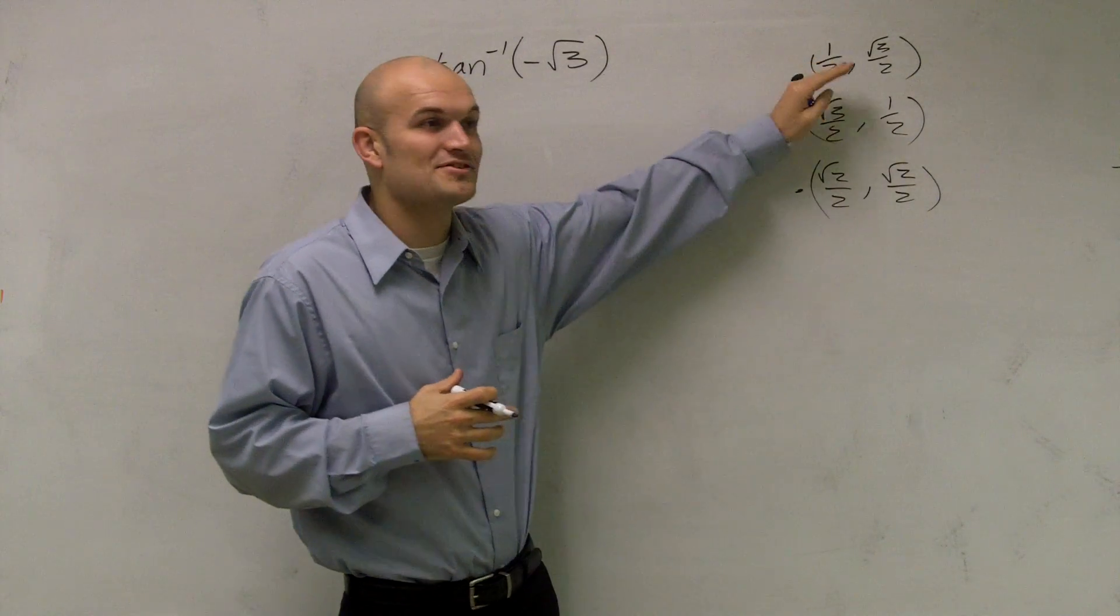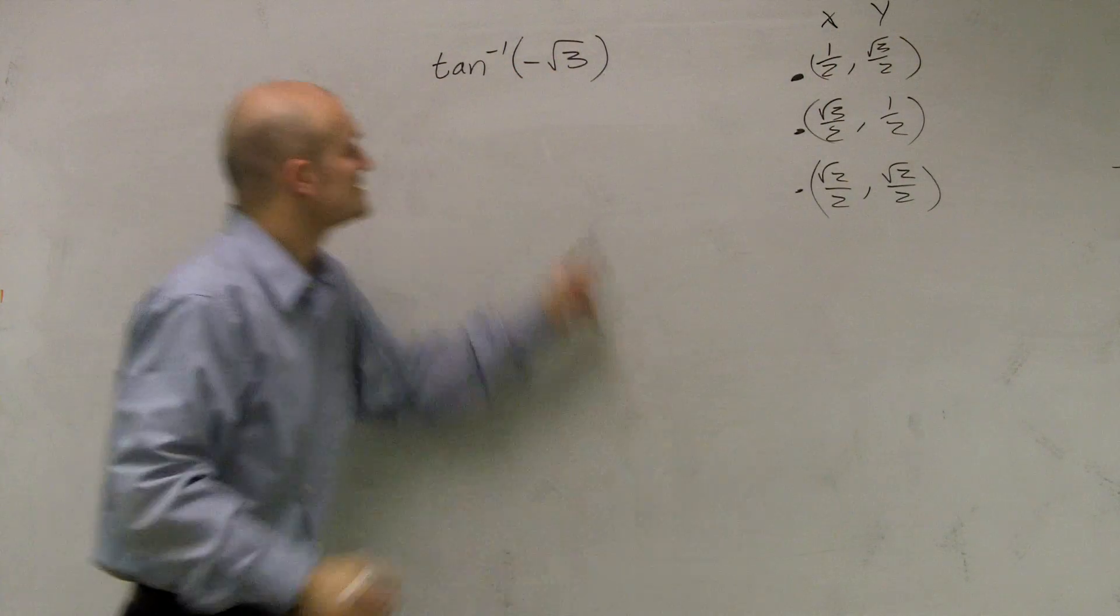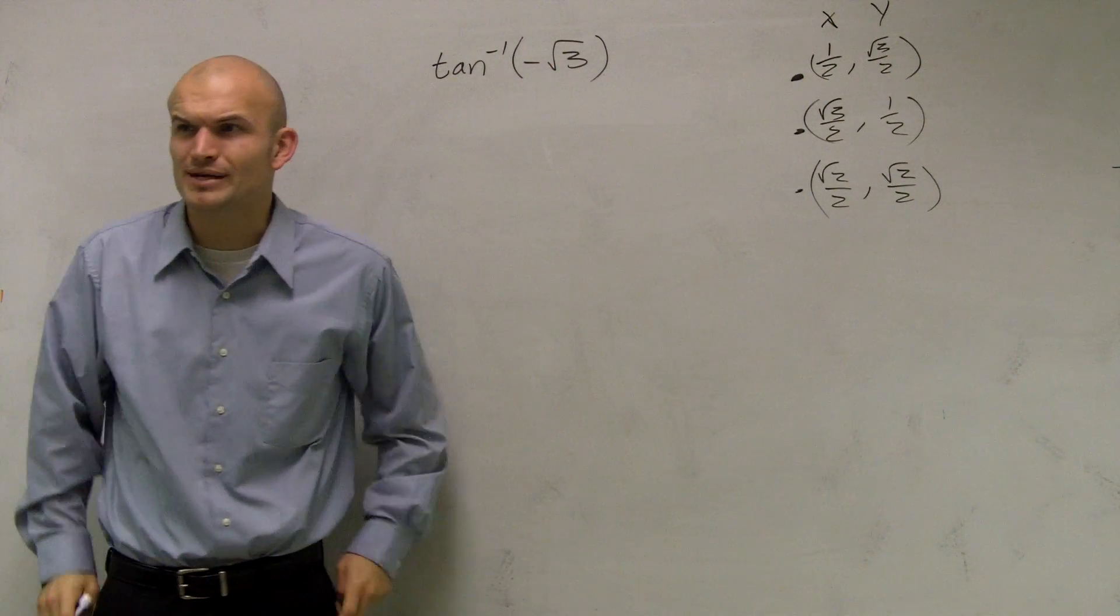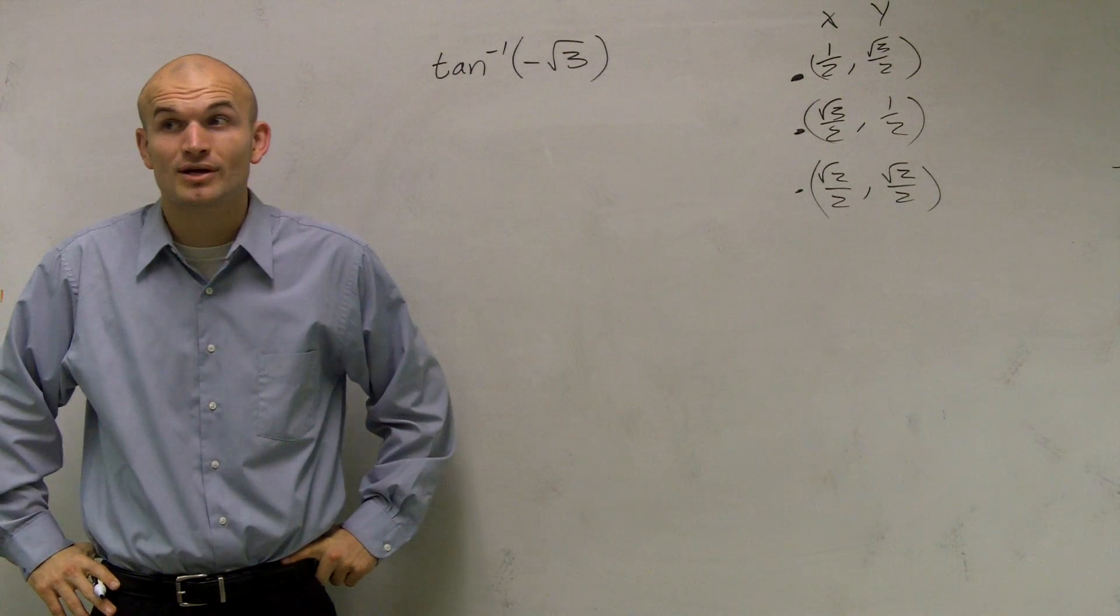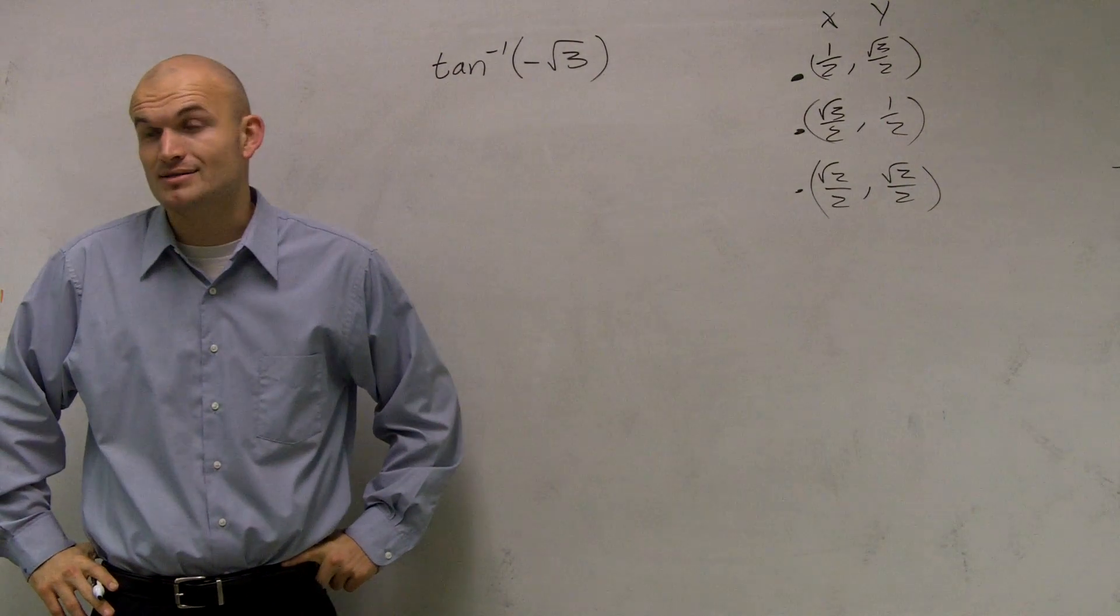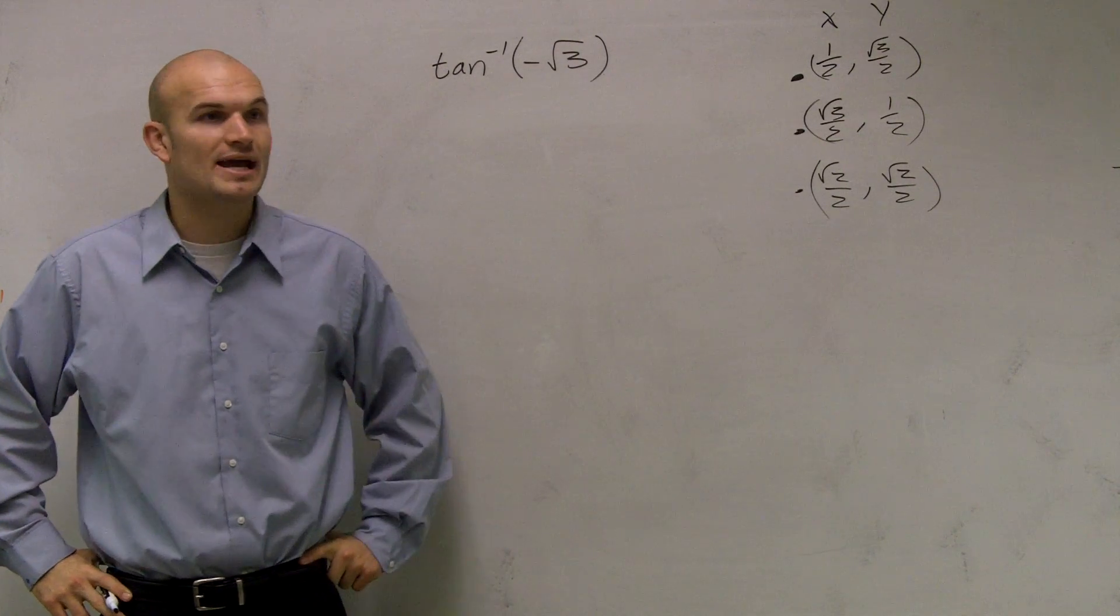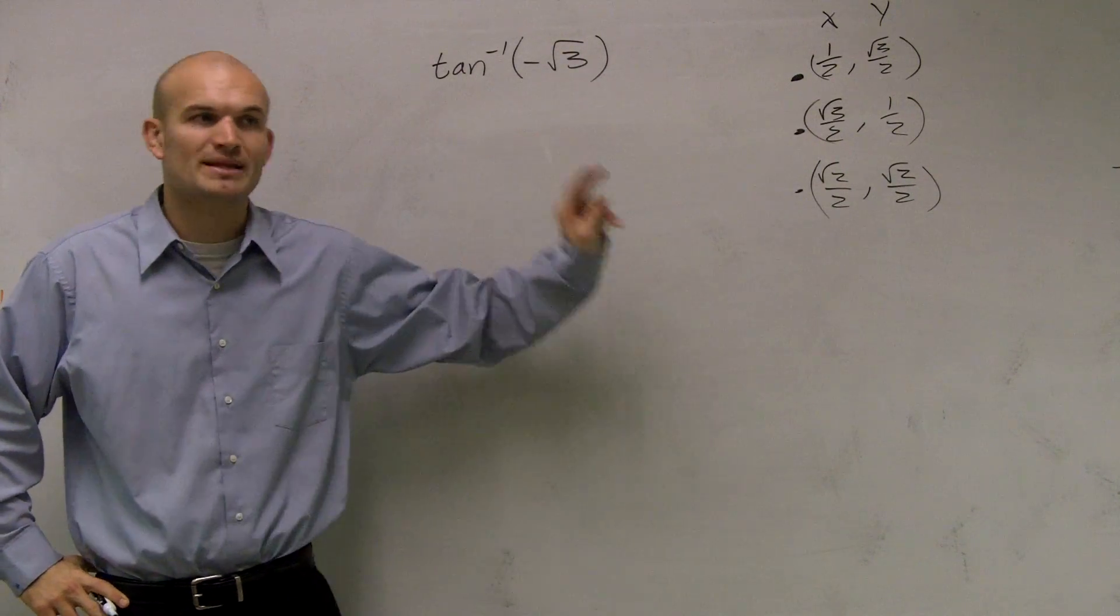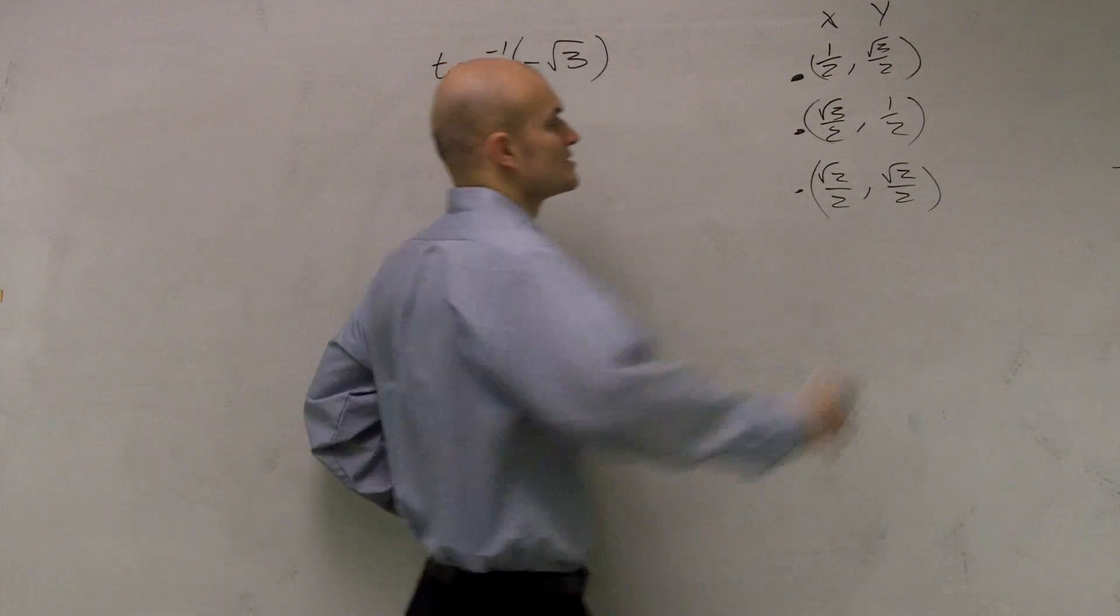So if you guys remember, here's your x, and here's your y. Well, they're saying tangent is radical negative 3. So how did they get to that point? Well, remember, all they really did was put your y over your x. So what we need to do is determine which y over x is going to yield us a radical 3. And I'm not going to worry about the negative, because that's just going to deal with what your direction is.